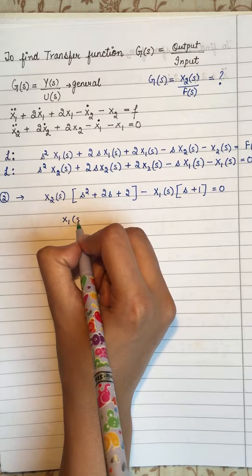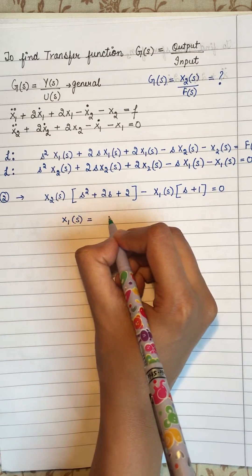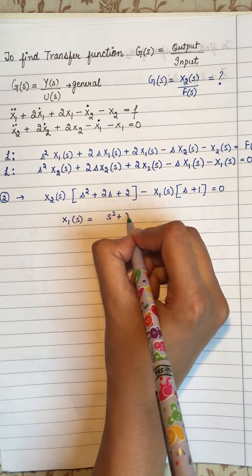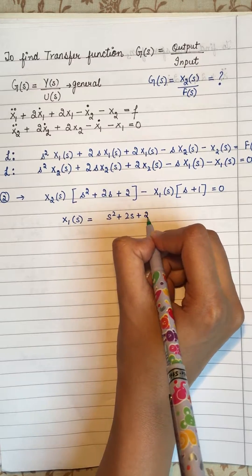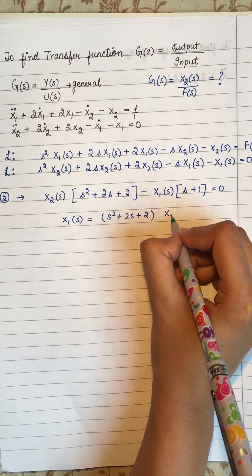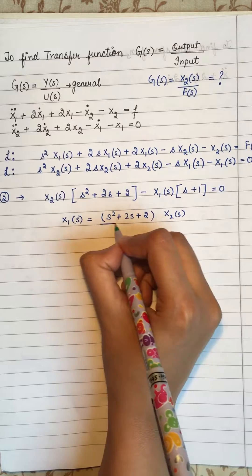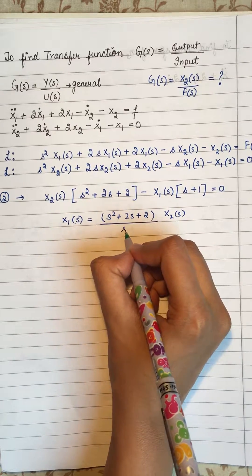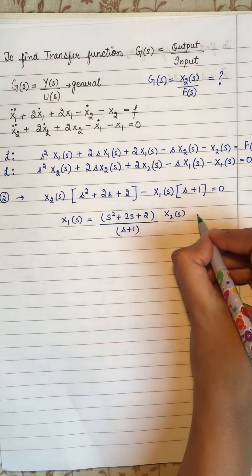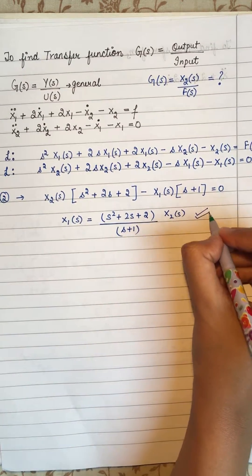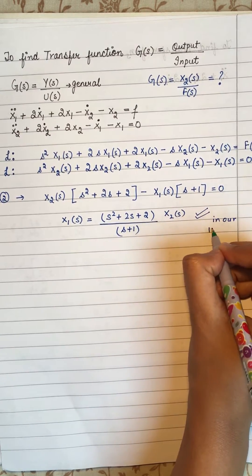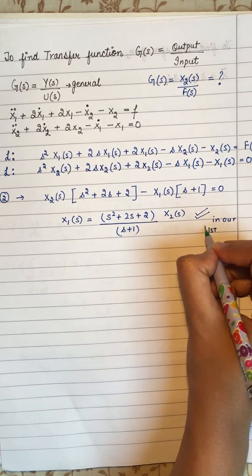From the second equation, we will find X1(s) in the form: X1(s) equals (s² + 2s + 2) times X2(s) divided by (s + 1). Now we will put this equation into our first equation.